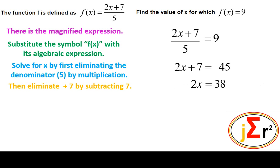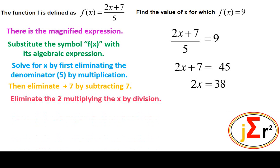2x = 38. Finally, find the value of x by eliminating the 2 by which it is being multiplied on the left-hand side. We do that by dividing by 2. The 2 will be eliminated from the left-hand side, but we also need to divide the right-hand side by 2. 38 divided by 2 is equal to 19.